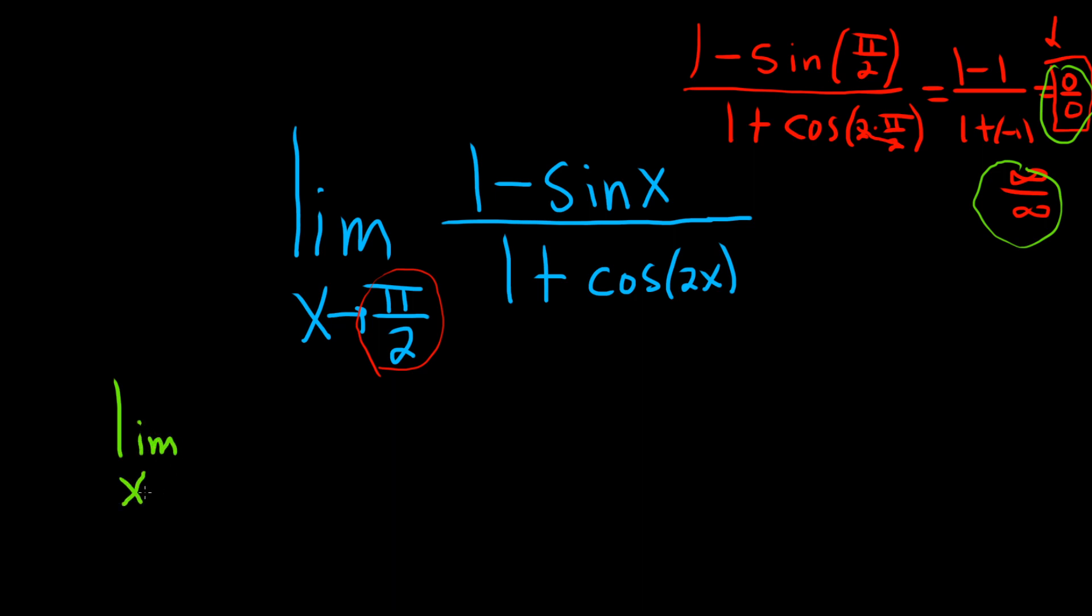So we have the limit as x approaches pi over 2. The derivative of 1 is 0 and the derivative of sine is cosine. So this will be negative cosine of x over... On the bottom the derivative of 1 is 0.